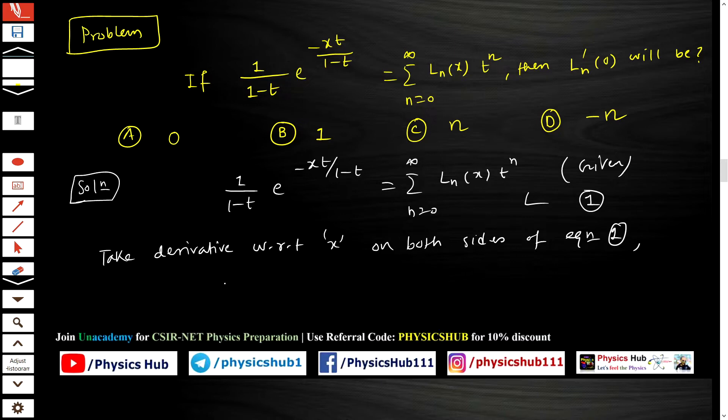So if you take the derivative with respect to x, what you get: 1/(1-t) times the derivative of e^(-xt/(1-t)) will produce e^(-xt/(1-t)) times (-t/(1-t)), which equals the sum from n=0 to infinity of t^n * ln'(x). Let us say this is equation number 2.